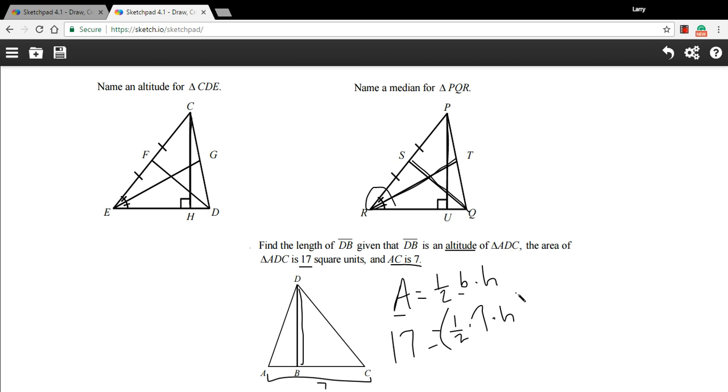So 2 times 17 is 34, equals 7 times the height. We want to solve for height. That's our altitude. Height is multiplied by 7, so I'm going to divide by 7. So our altitude here, our height, is 34 sevenths.